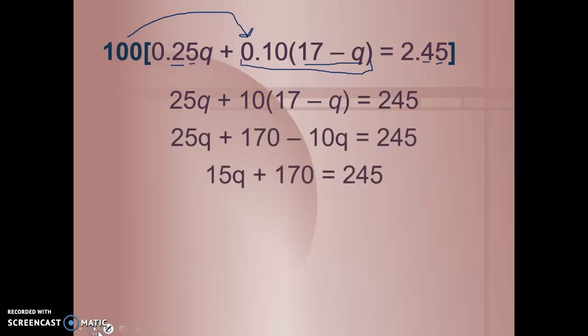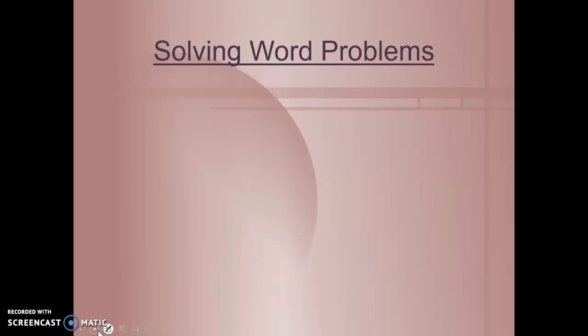Now, we can distribute, combine like terms, and solve for Q. And you should find that he has 5 quarters. Knowing that, we know how many dimes he has: 17 minus 5 is 12 dimes.